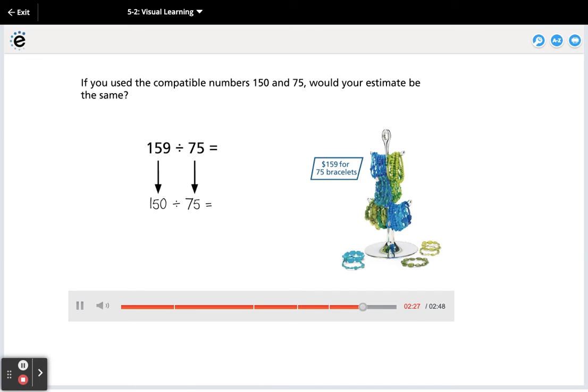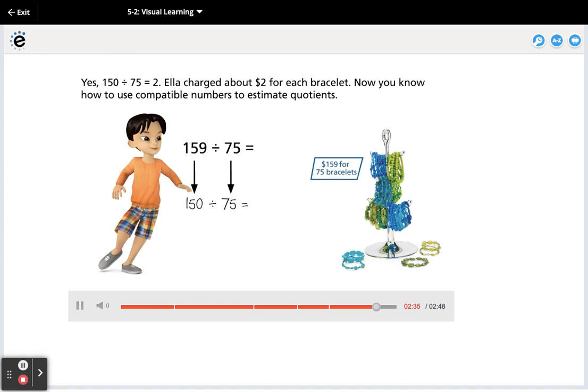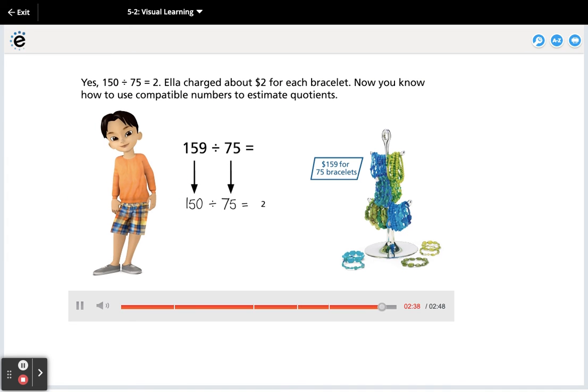If you use the compatible numbers 150 and 75, would your estimate be the same? Yes, 150 divided by 75 equals 2. Ella charged about $2 for each bracelet. Now you know how to use compatible numbers to estimate quotients.